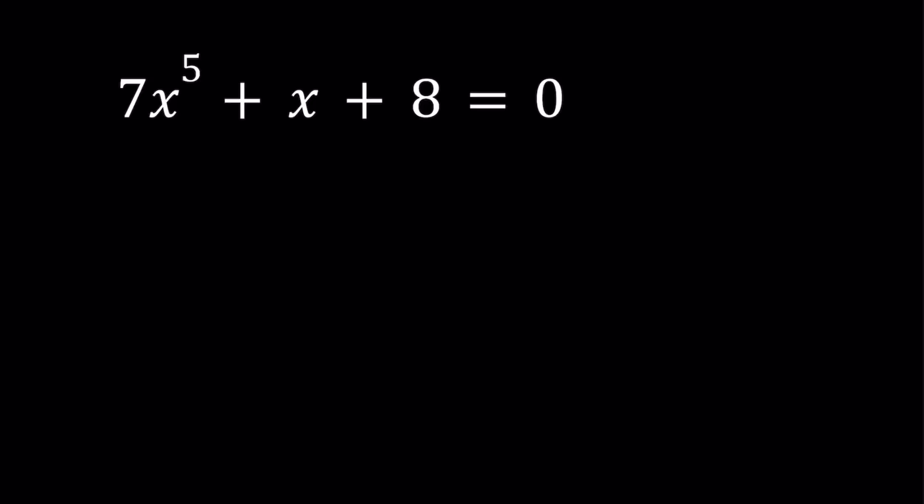Notice that 7, 1, and 8 kind of give us a clue. So 7 plus 1 is equal to 8. That means the odds are equal to evens. What do I mean by odds and evens? If you look at the powers of x, this is x to the power 1, this is x to the power 5, and this is x to the power 0. So if you group the coefficients as evens and odds, then the sum in each group equals each other.